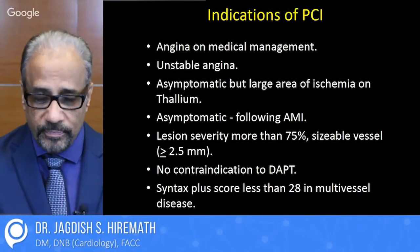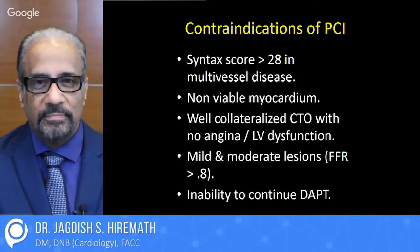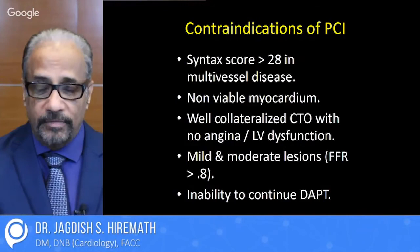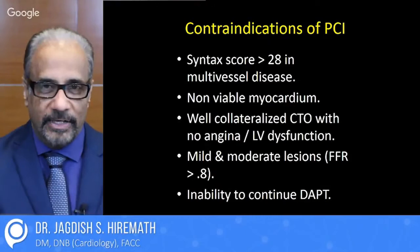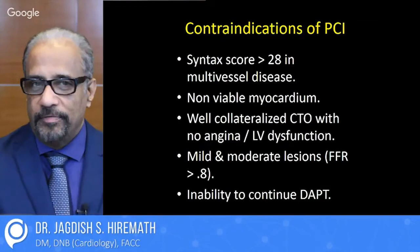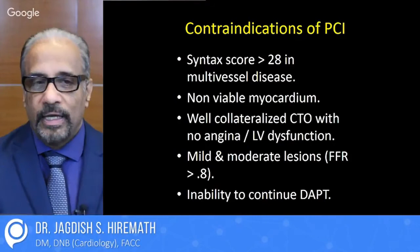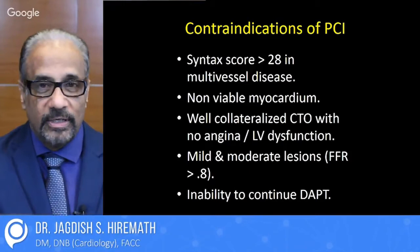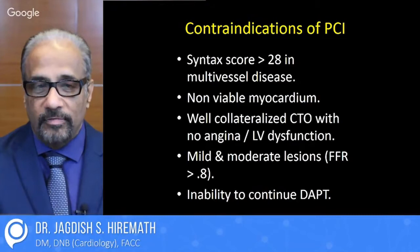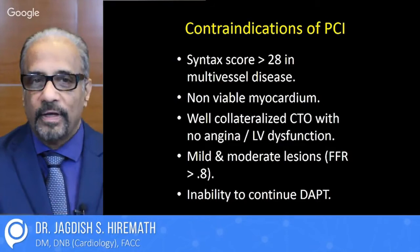There is a score called the syntax score, which is based on calcium, bifurcations, lesion severity, and lesion tortuosity. If this score is more than 28, then multivessel angioplasty takes a back seat compared to bypass surgery. But if the syntax score is less than 28, even in multivessel disease, angioplasty could be preferred. If the myocardium is not viable, obviously there is no point doing angioplasty. If a person has a completely occluded artery that is well collateralized, with no LV dysfunction and not much ischemia, that total occlusion can be left alone. If FFR gives a value of more than 0.8, it is probably not an indication to do coronary angioplasty.